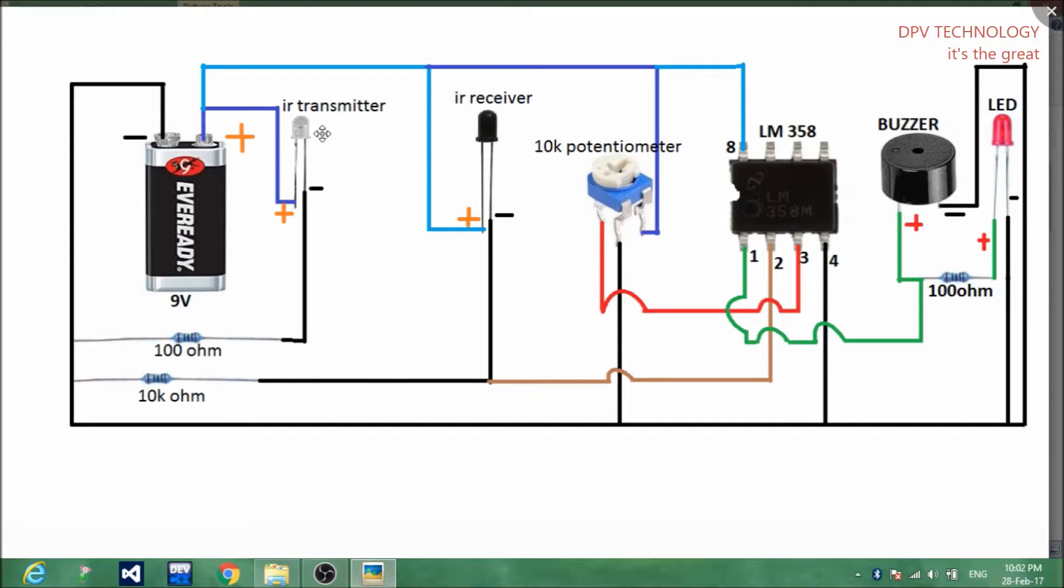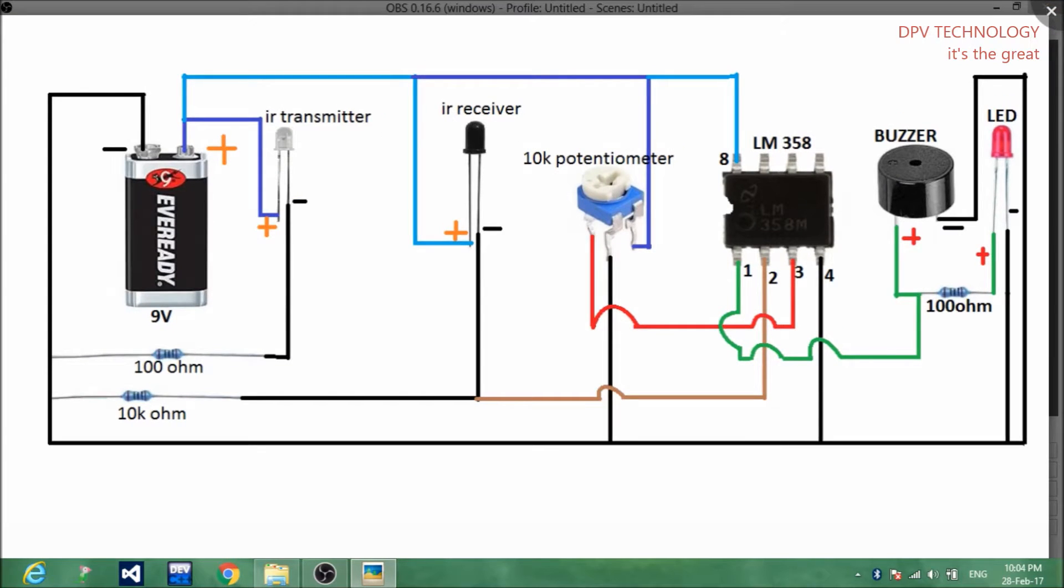You have to place this IR transmitter in front of this IR receiver always at a certain distance. In between them you can put your finger or other things to test this circuit.